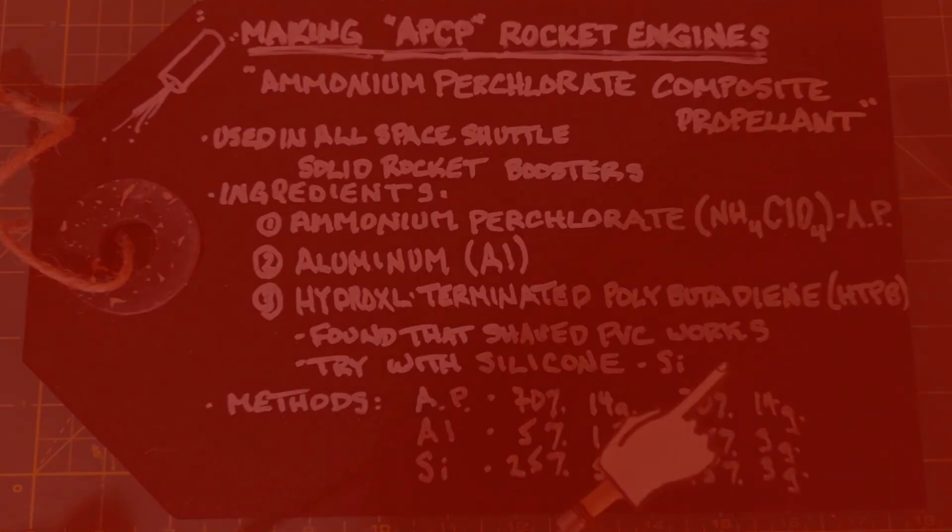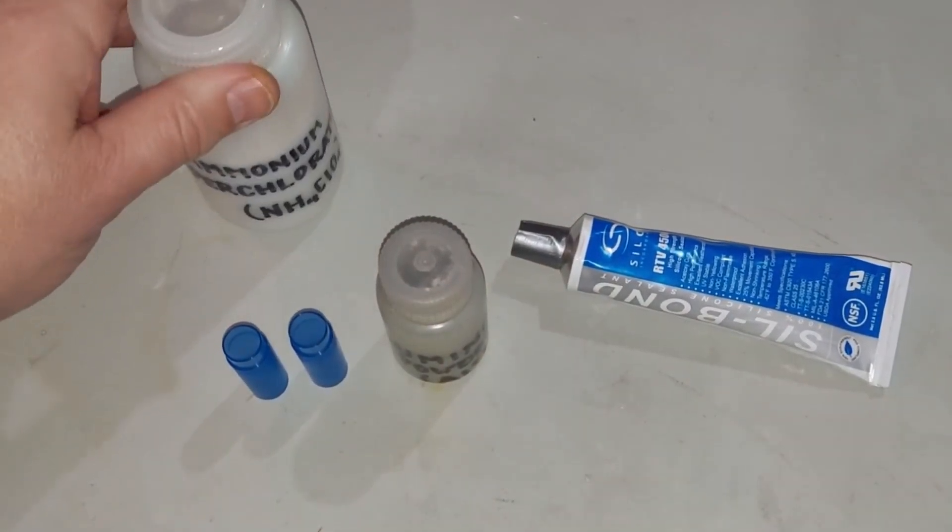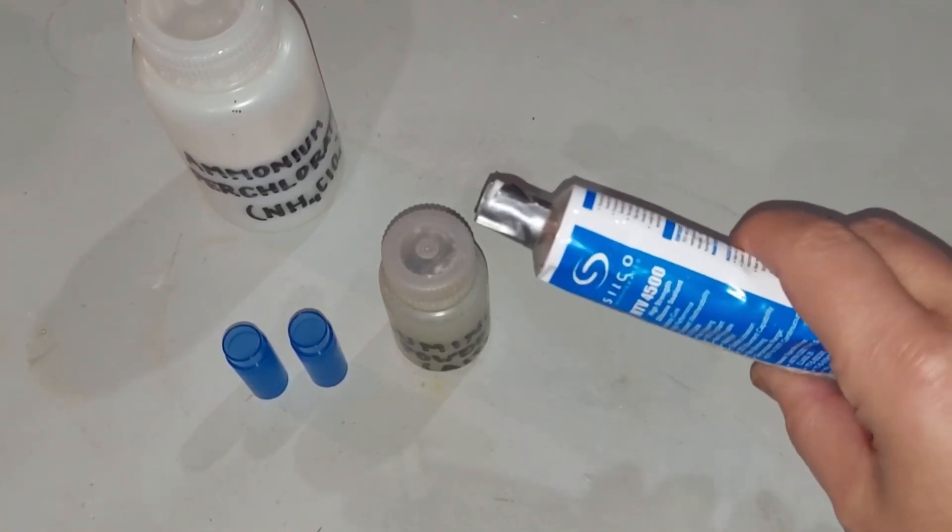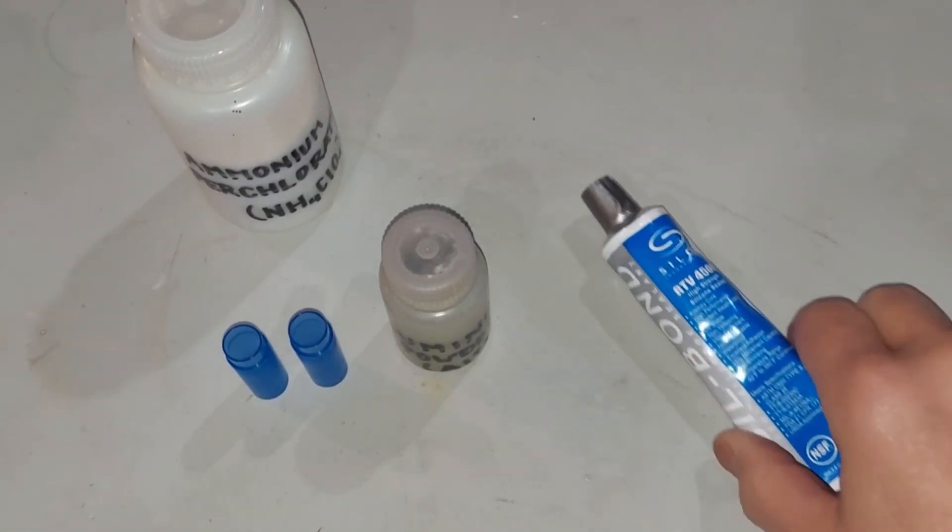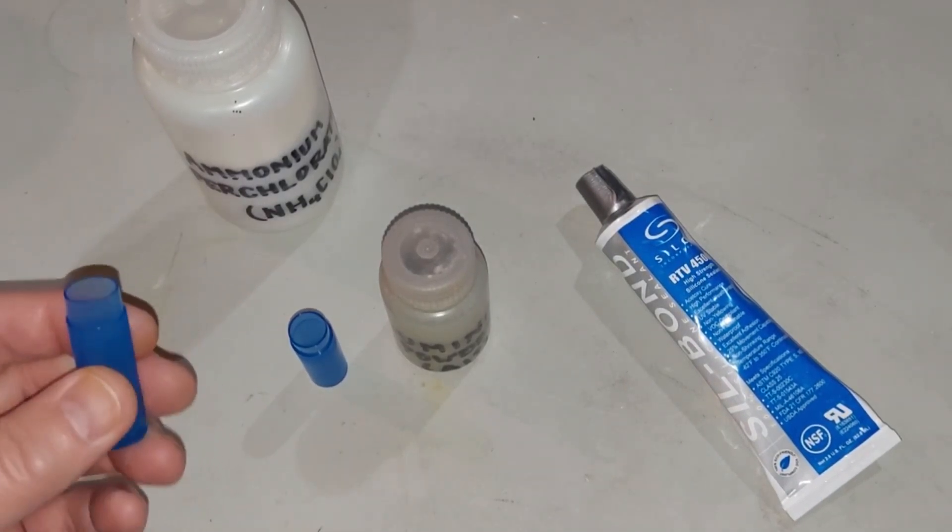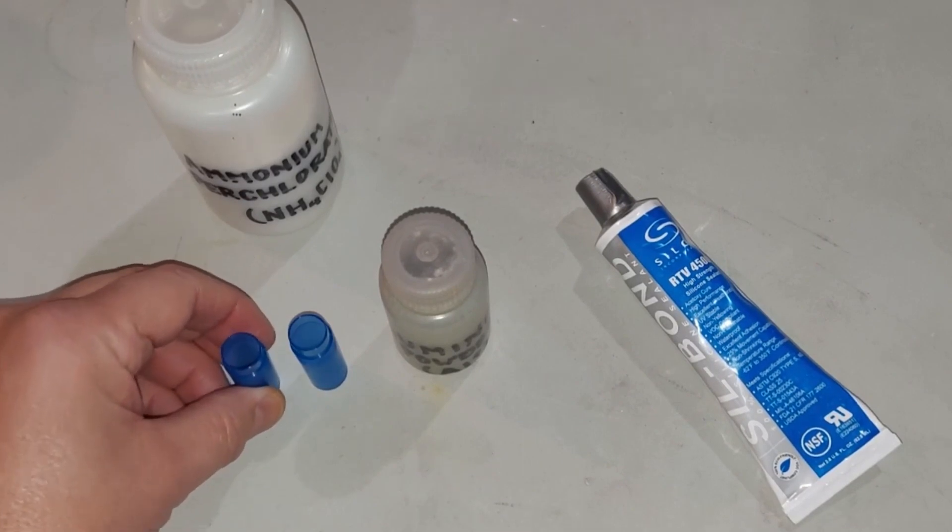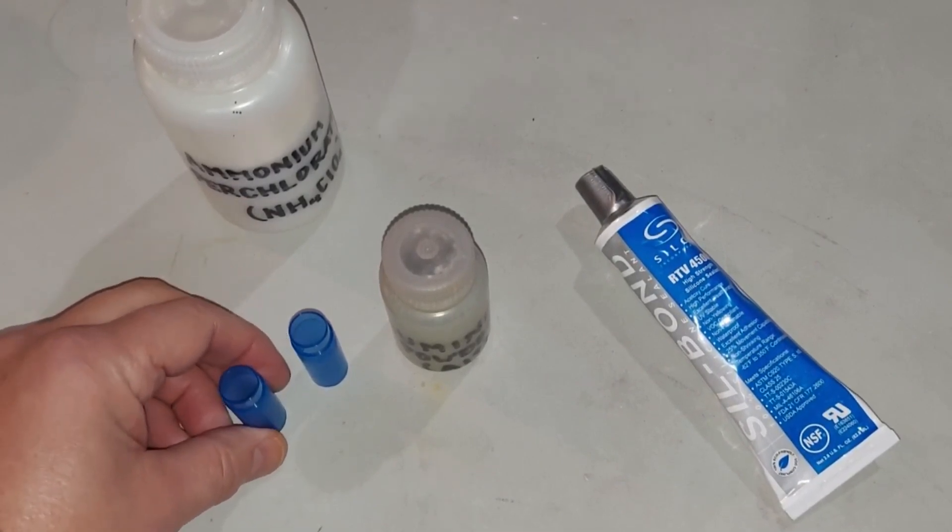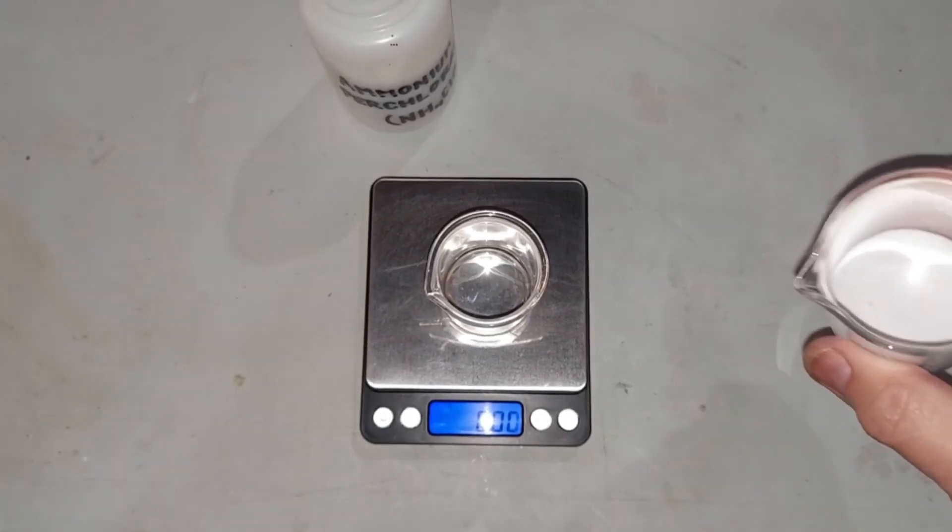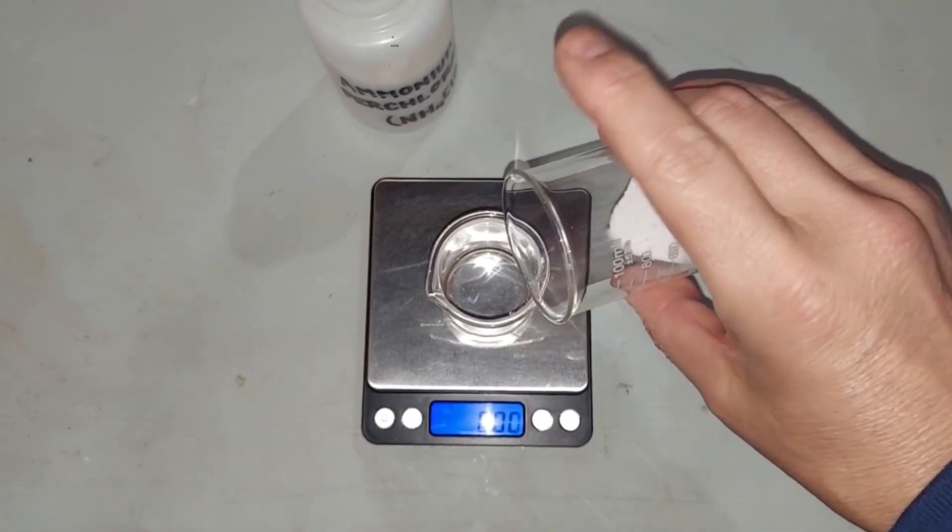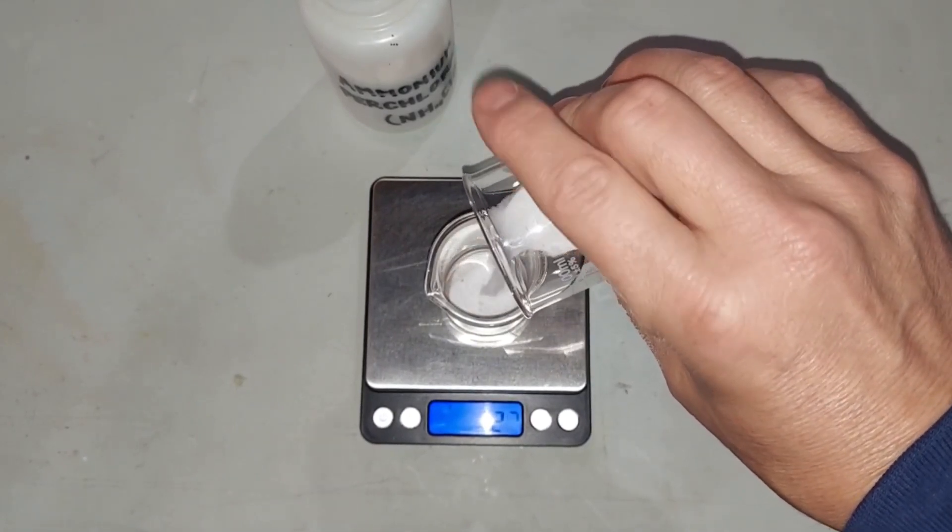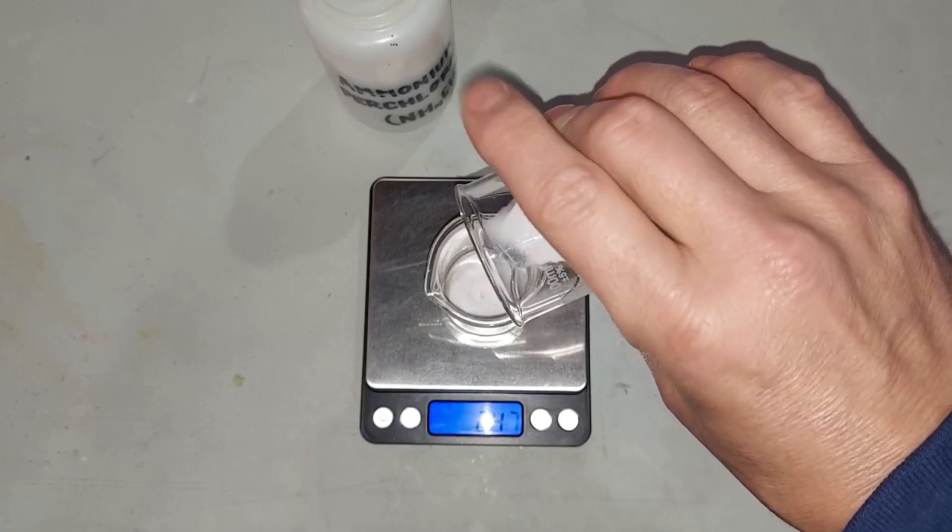Here are the ingredients: my ammonium perchlorate, the powdered aluminum, and the silicone, and this is just regular silicone I got on Amazon. Here are some containers I'd saved, things like chapstick containers, anything that can act as a housing for a rocket engine that's not too big for tests is perfect. My ammonium perchlorate had really chunked so it was hard to weigh because big chunks kept falling in, so I transferred it to another beaker and broke it down a bit.